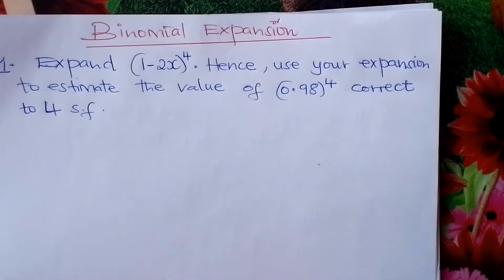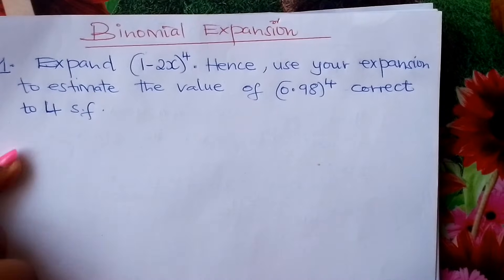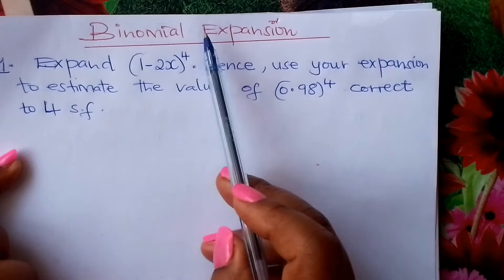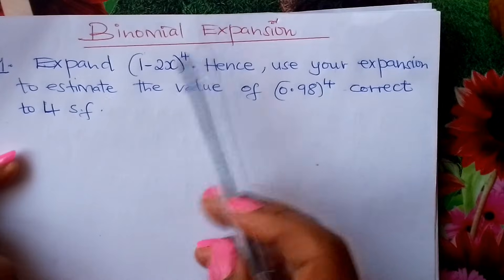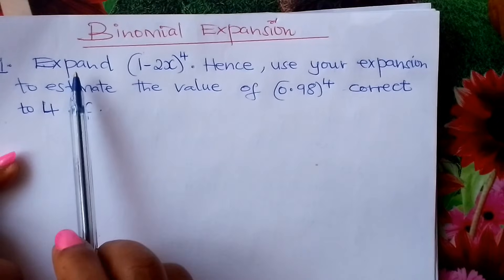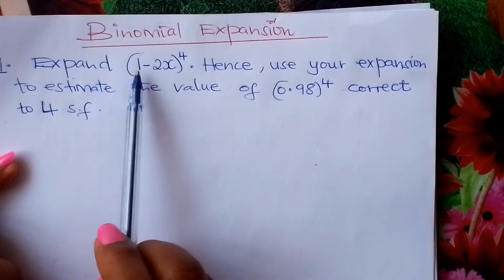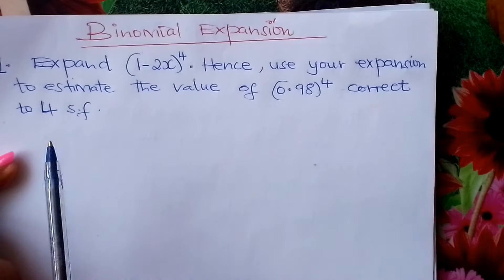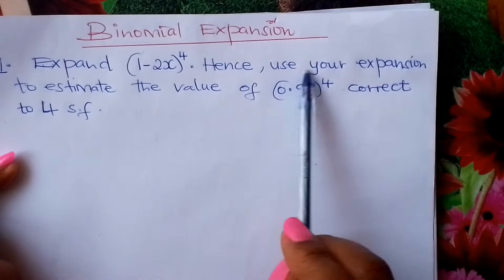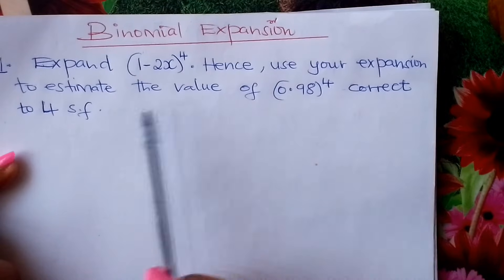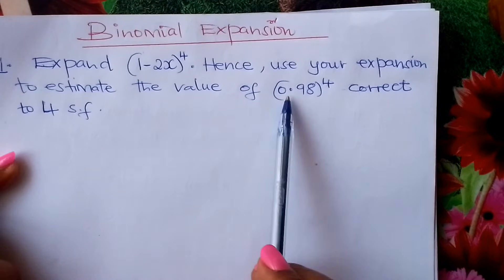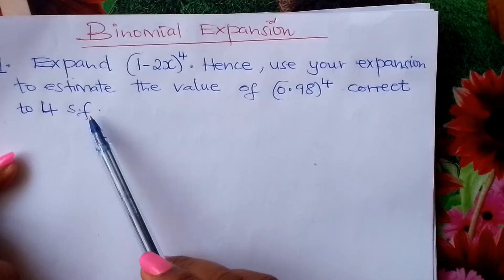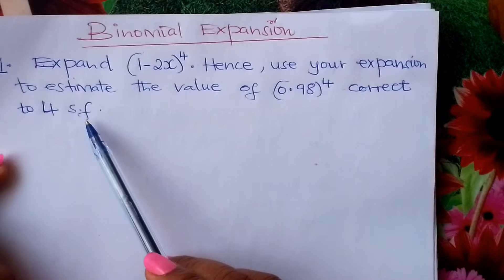Welcome learners to Form 3 Mathematics. Today I would like us to look at this question on binomial expansion. We are told to expand (1 minus 2x) raised to 4, and hence use the expansion to estimate the value of 0.98 raised to 4, correct to 4 significant figures.